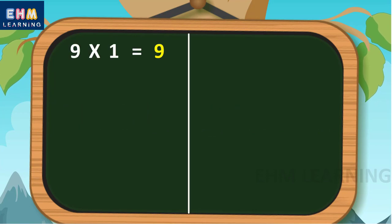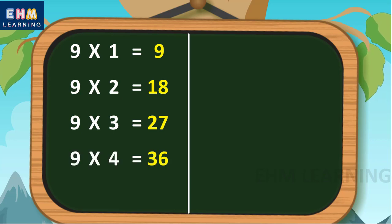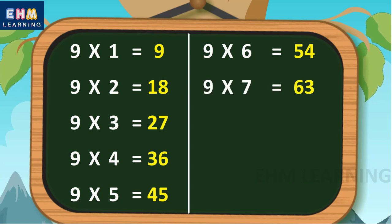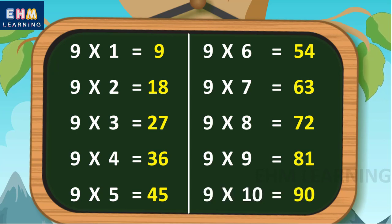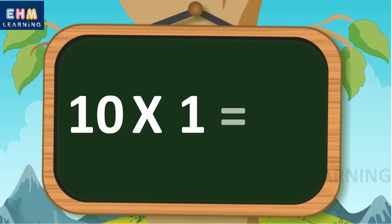Let's learn again. Nine ones are nine, nine twos are eighteen, nine threes are twenty-seven, nine fours are thirty-six, nine fives are forty-five, nine sixes are fifty-four, nine sevens are sixty-three, nine eights are seventy-two, nine nines are eighty-one, nine tens are ninety.